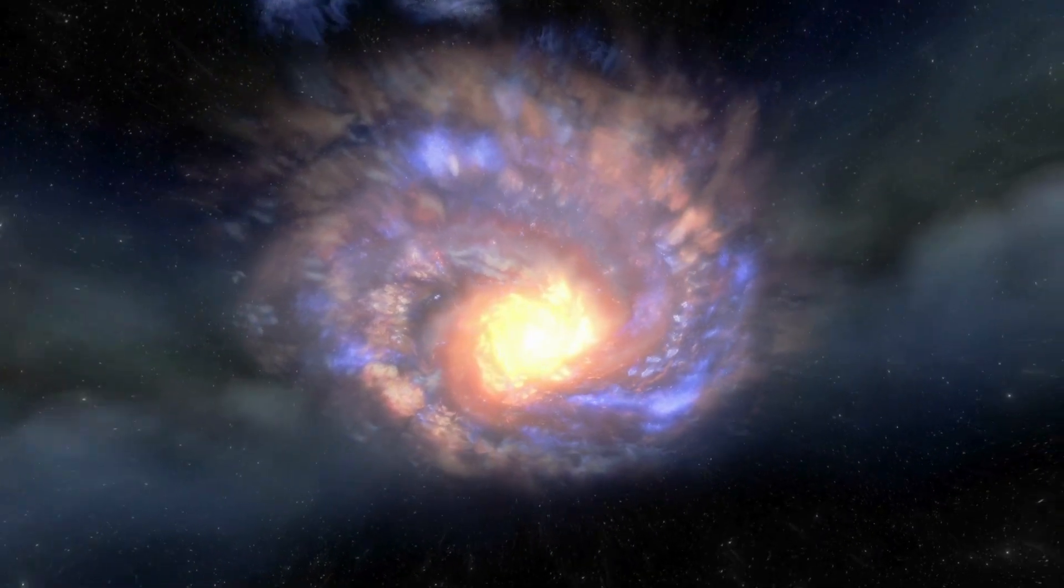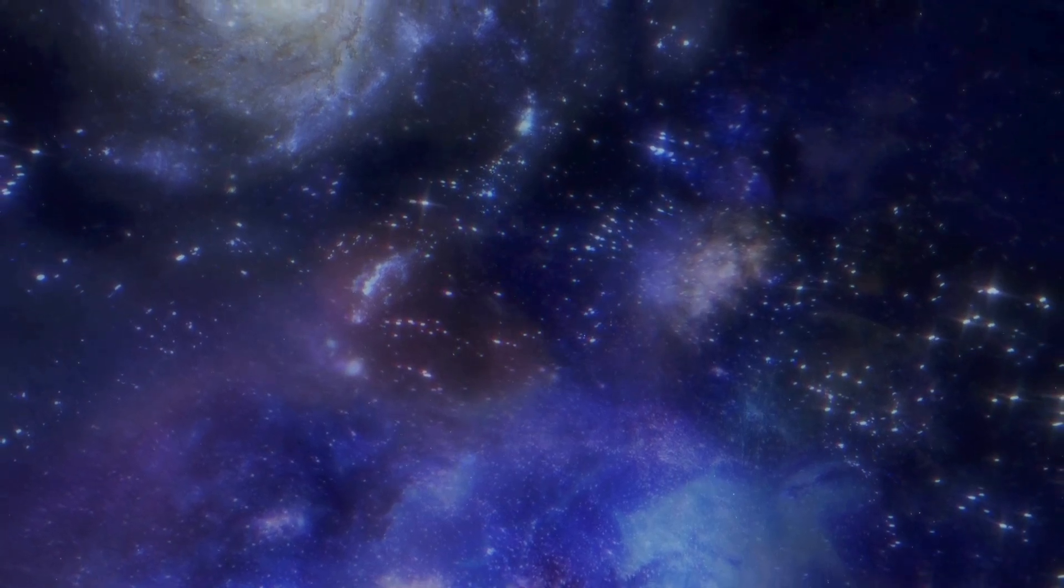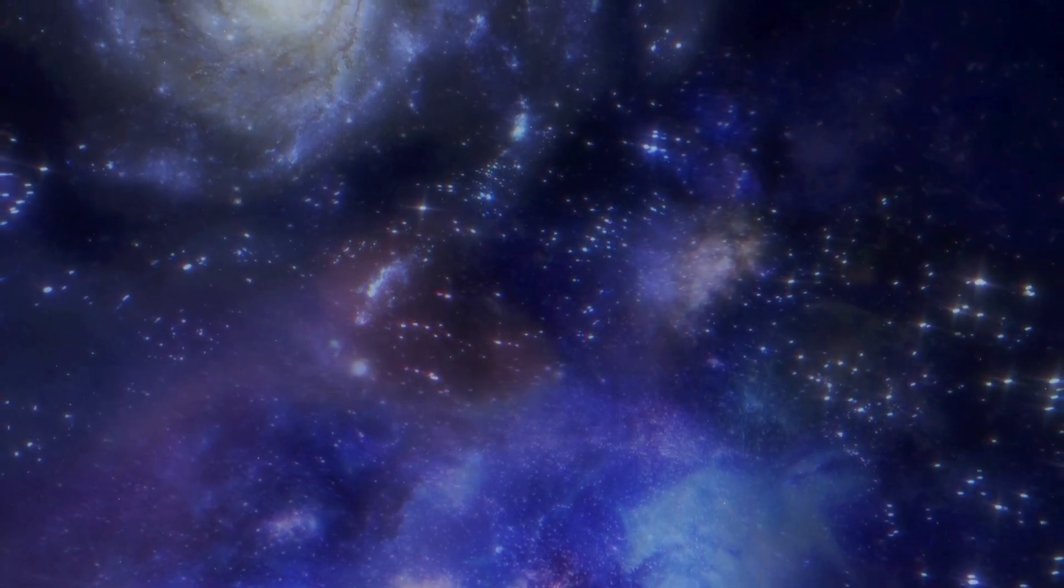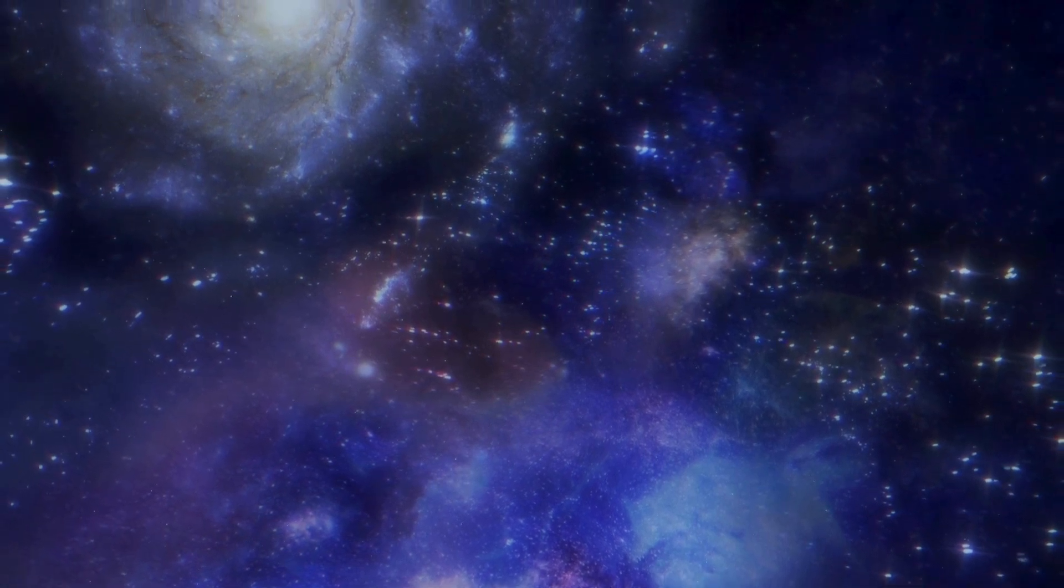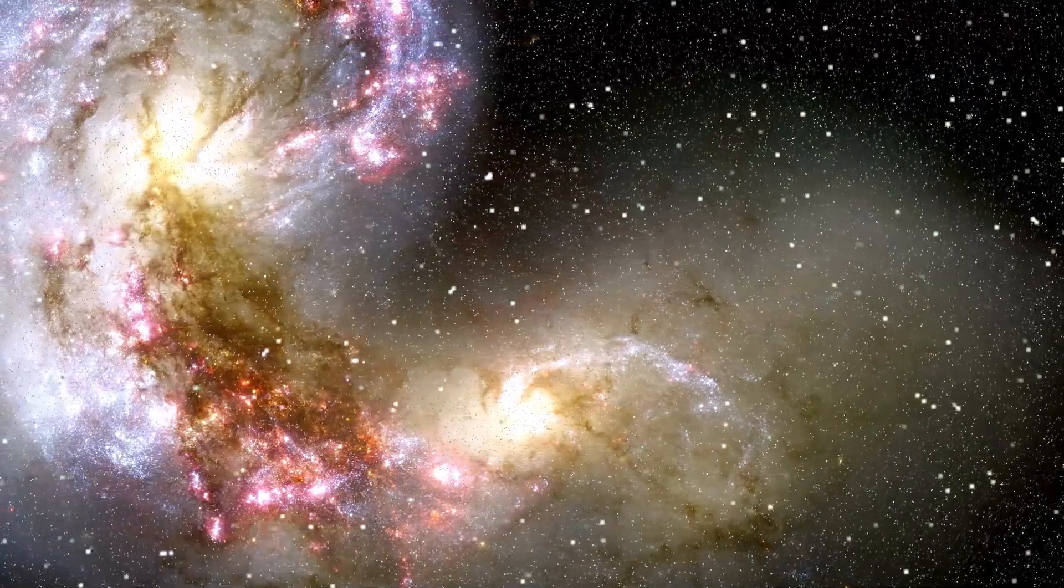Around 5 billion years from now, our Sun is projected to evolve into a red giant, eventually expanding and engulfing the inner planets, including Earth. This process will likely render our solar system uninhabitable long before the merger between the two galaxies takes place.